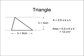Here's an example. The base is 6 centimeters, the height is 4 centimeters, so the area is half the base times the height equals 12 square centimeters.